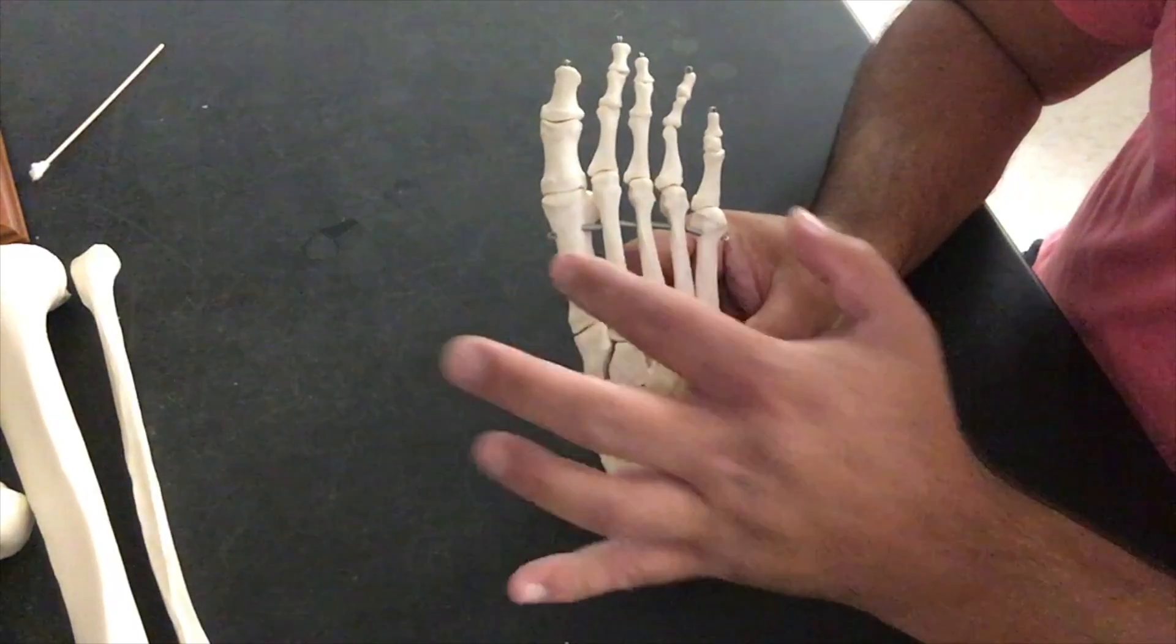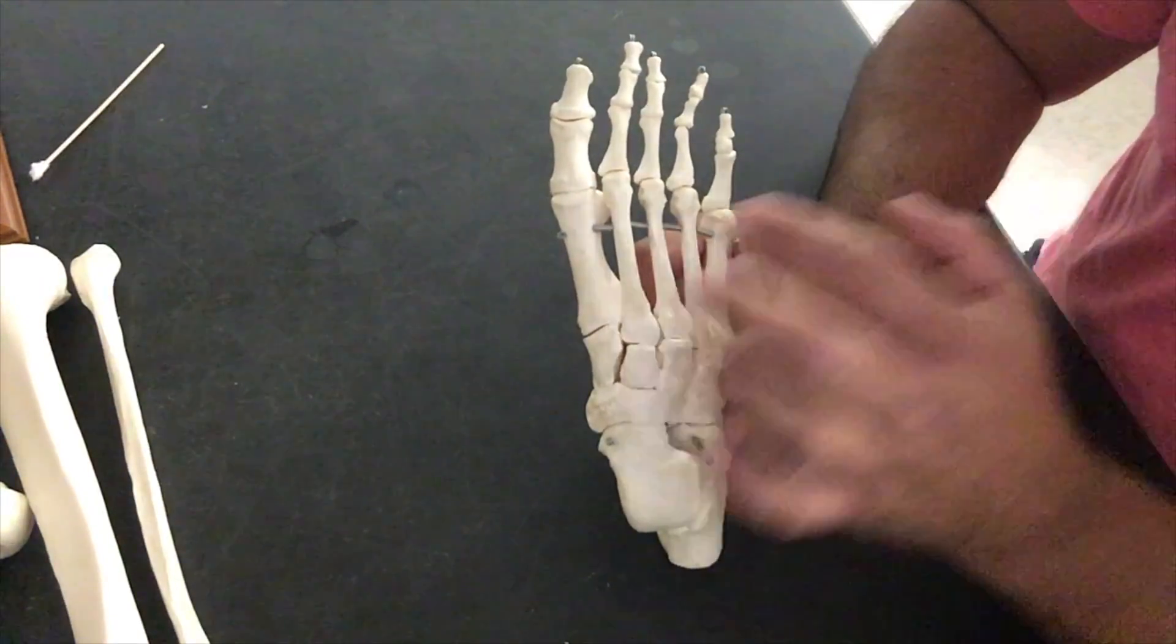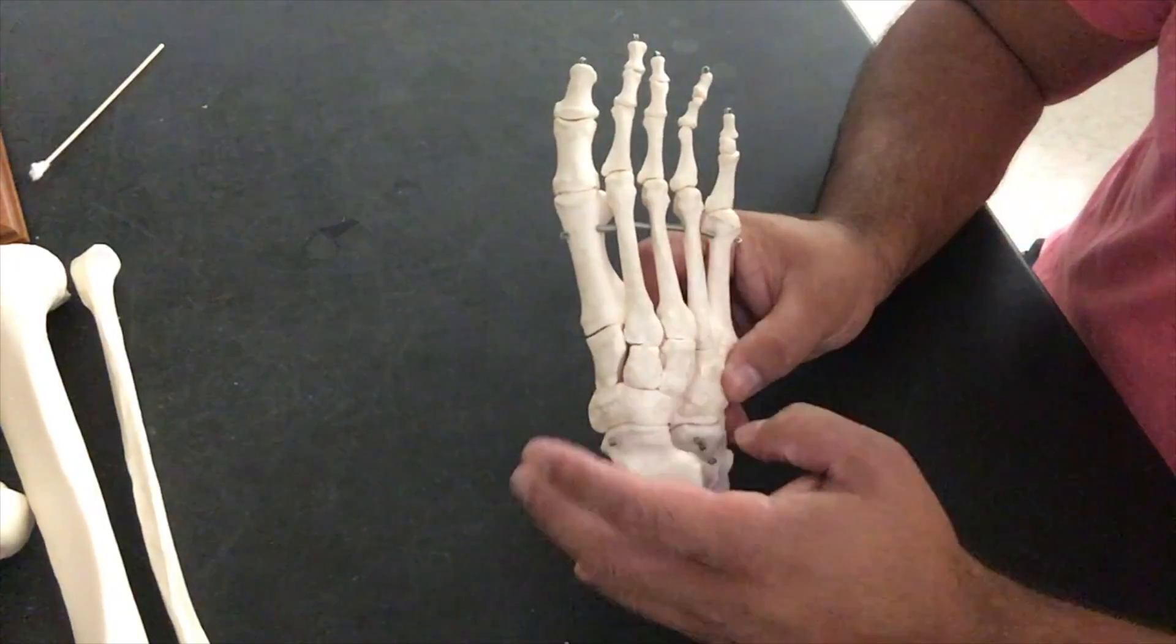We're going to have our metatarsals: one, two, three, four, five. So we number them based on big toe towards our pinky toe.